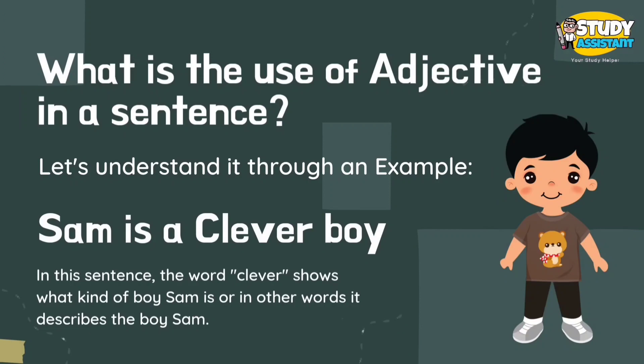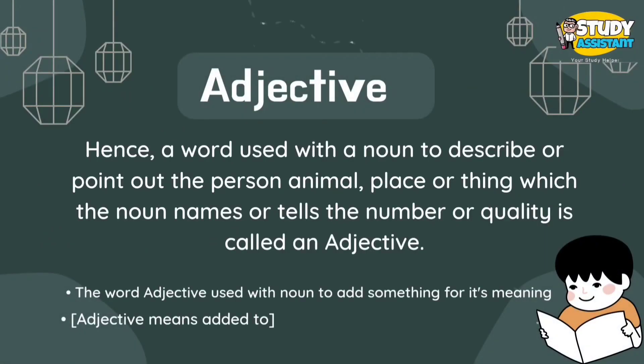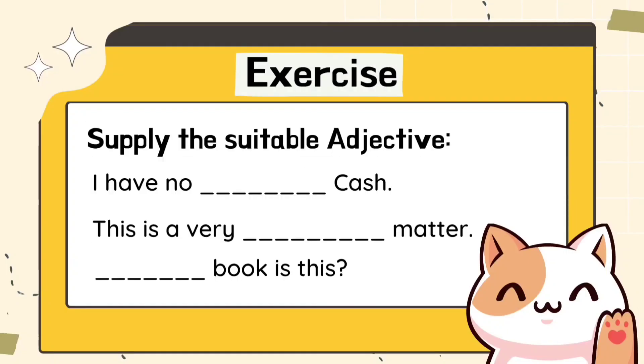So why is the adjective used in a sentence? Let us try to understand it through an example. 'Sam is a clever boy' — here 'clever' shows what kind of boy, and it describes the boy Sam. Hence, a word used with a noun to describe or point out the person, animal, place, or thing which the noun names, or to tell the number or quality, is called an adjective. We may define an adjective as a word used with a noun to add something to its meaning. The word 'adjective' means 'added to.'